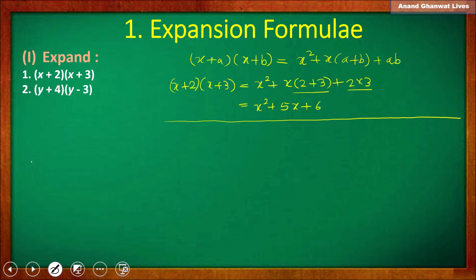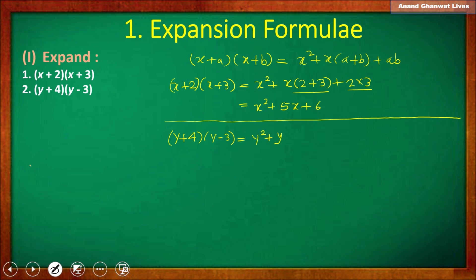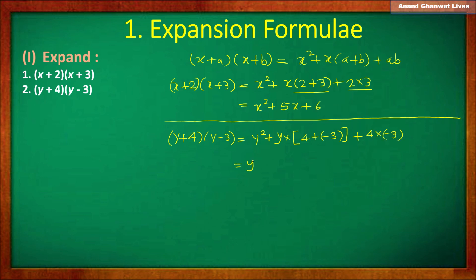Next question: (y + 4)(y - 3). Using the expansion formula: y² + y(4 + (-3)) + 4×(-3). Since 4 and -3 have different signs, find the difference: 4 - 3 = 1, so we get y. For 4×(-3): 4×3 = 12, and positive times negative is negative, so -12. Final answer: y² + y - 12.